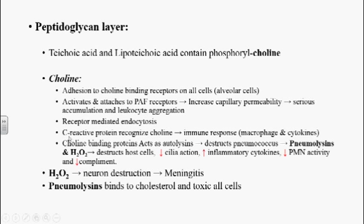These choline molecules can be easily recognized by C-reactive proteins present in human tissues. Whenever C-reactive proteins recognize choline molecules, they stimulate the immune response by activating macrophages and stimulating cytokine release. Some choline-binding proteins can act as autolysins — meaning they can destruct themselves. Whenever these molecules act as autolysins, they destroy the pneumococcus itself. When the pneumococcus is destructed, the cellular and cytoplasmic fragments and cell wall fragments can act as pneumolysins.